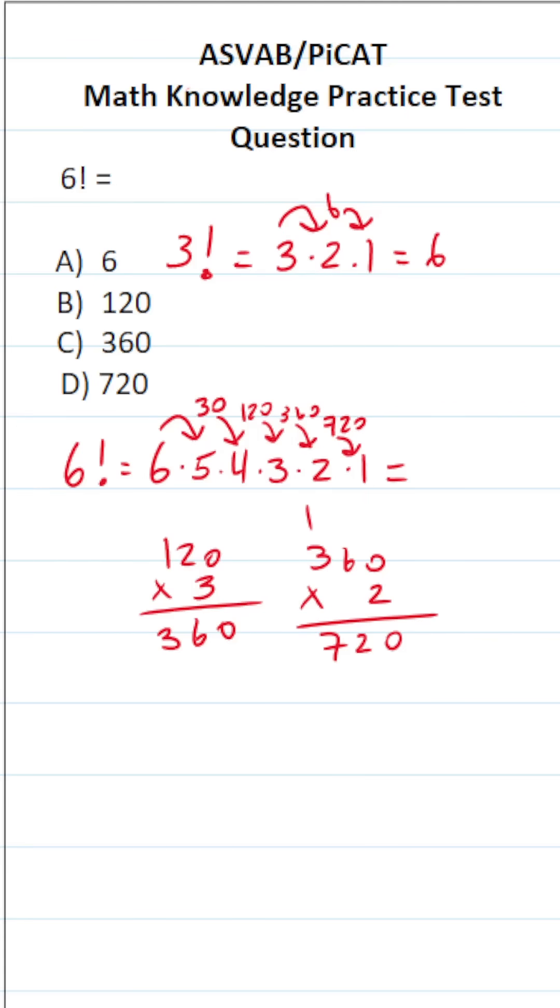What is 720 times 1? Well, anything times 1 is itself. So 720 times 1 is 720. In other words, 6 factorial is 720. So the answer to this one is D.